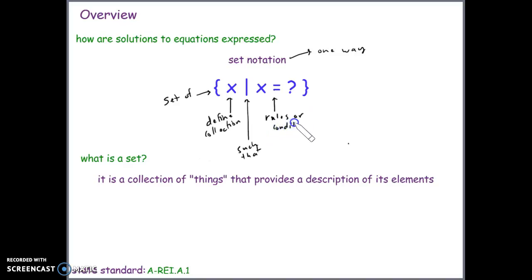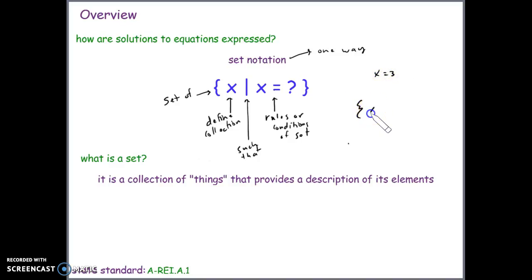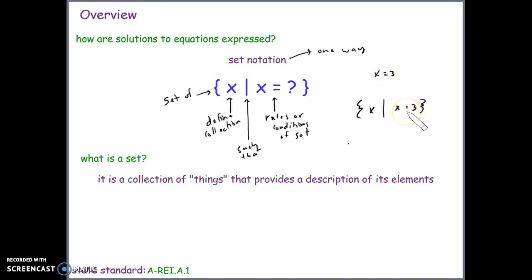For example, if our solution was X equals 3, we would write it in set notation as: the set of X such that X equals 3. This is the rule or condition of the set. Set notation is essentially a collection of things that provides a description of its elements along with a rule or condition.